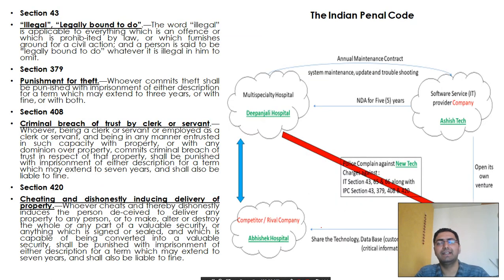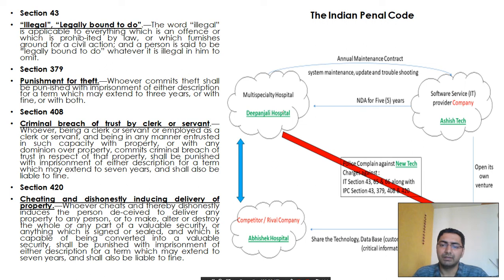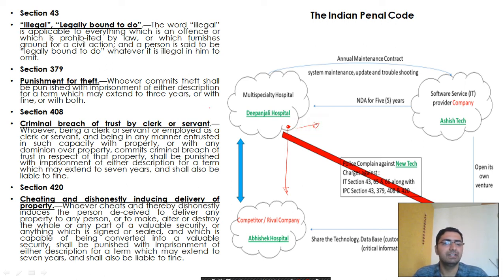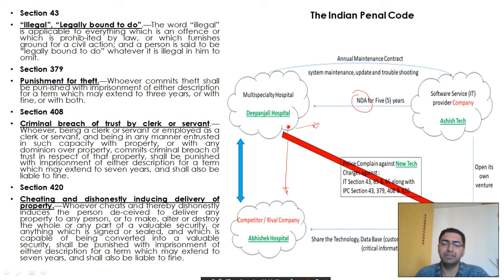Now we'll see which sections of the IPC are applicable. Since a patented product and source code were shared with a rival company and data was stolen, they will be charged under Section 379 of the IPC. Because Mr. VJ did not comply with the NDA, he will also be charged under Section 408. Section 420 is also applicable because there was cheating and dishonesty within the contract.